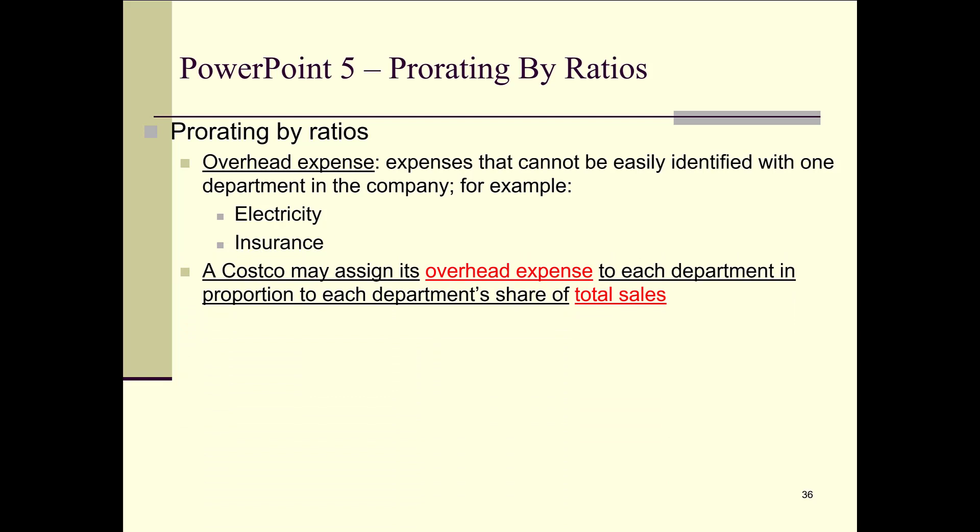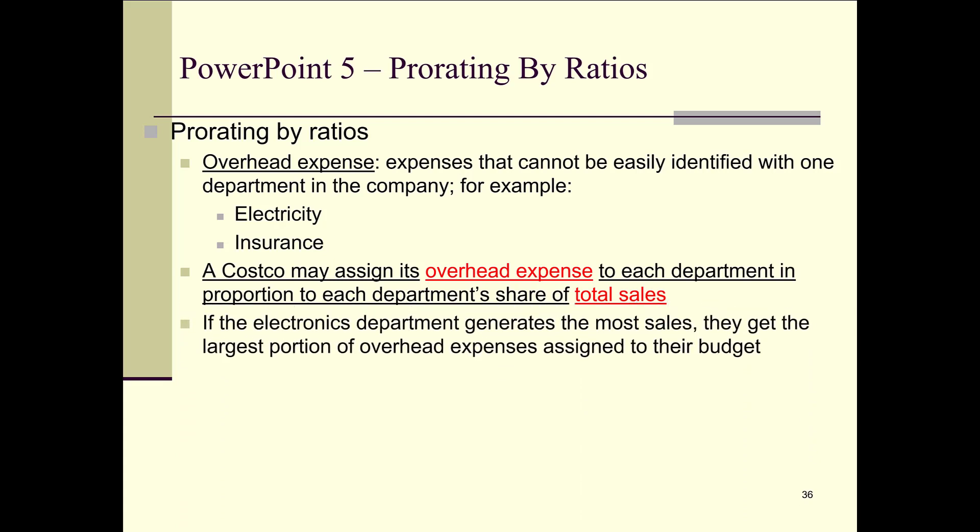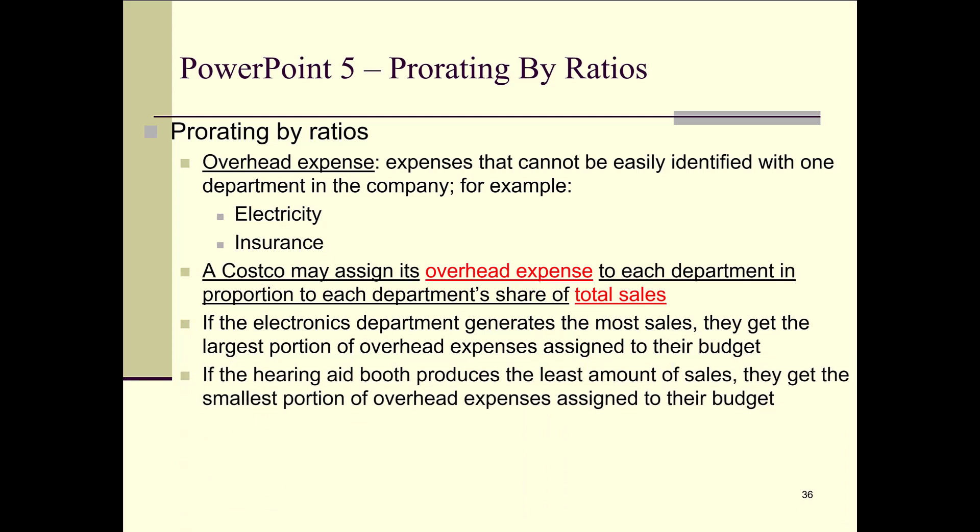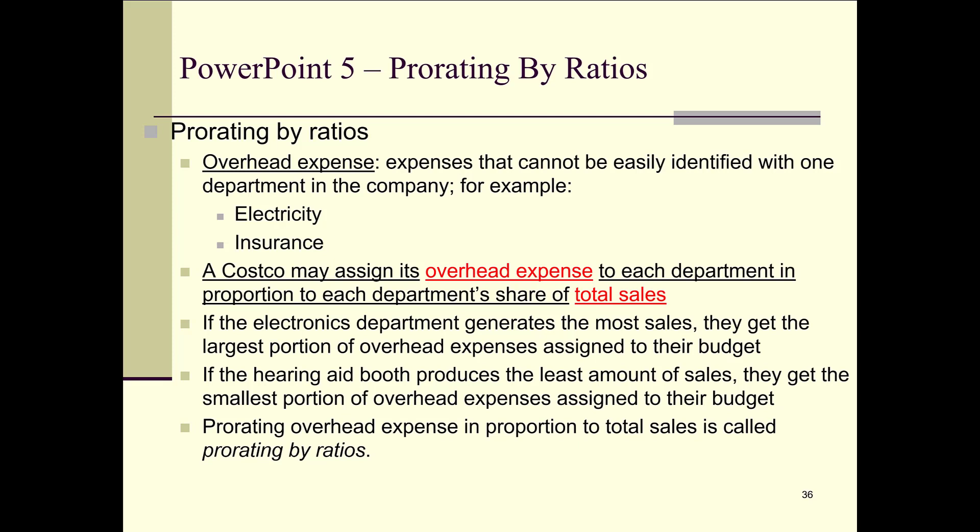So what Costco might decide to do is assign the overhead expenses to each department in proportion to each department's share of total sales. If the electronics department generates the most sales, they get the largest portion of overhead expenses. If the hearing aid booth produces the least sales, they get the smallest portion. Prorating overhead expense in proportion to total sales is called prorating by ratios.